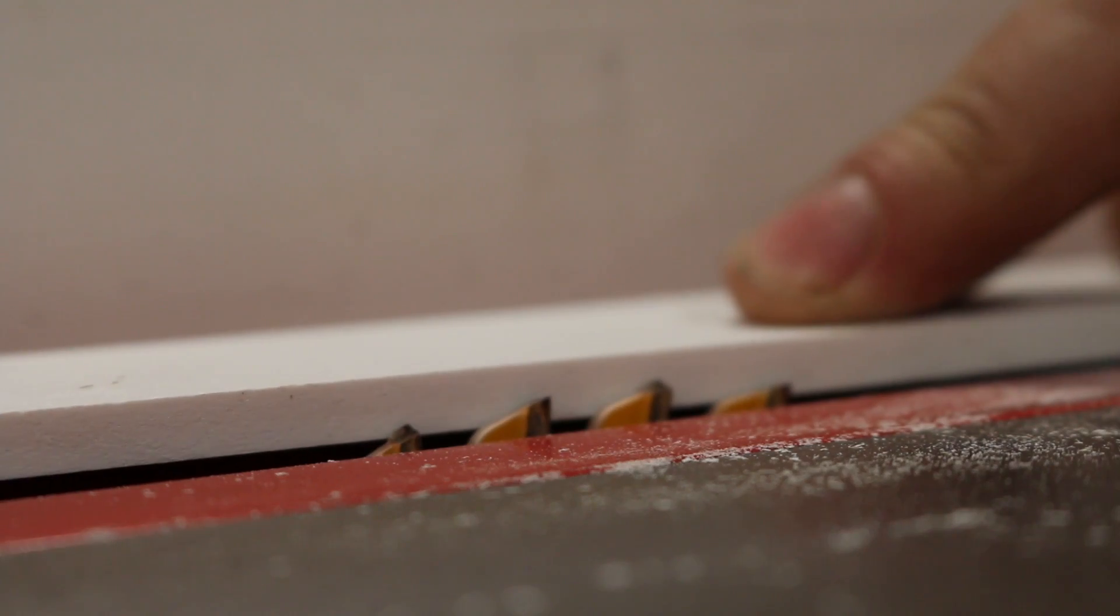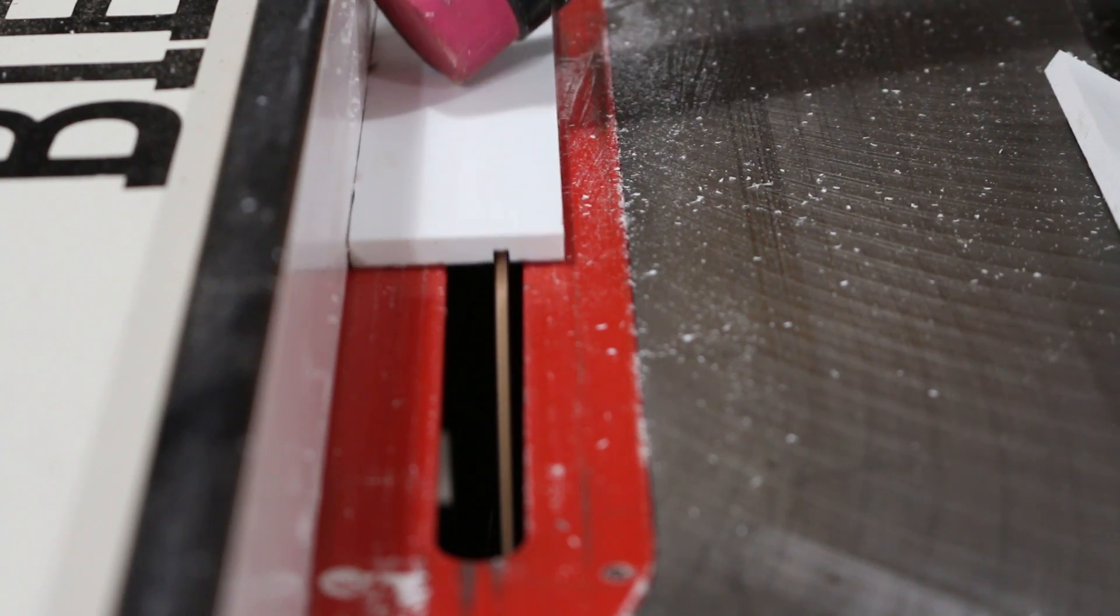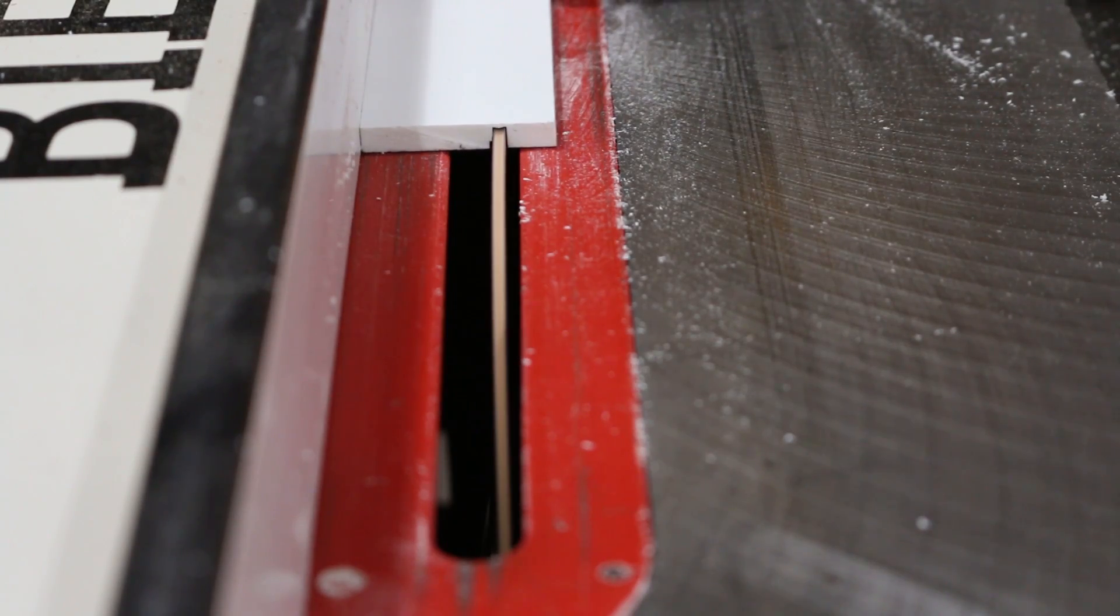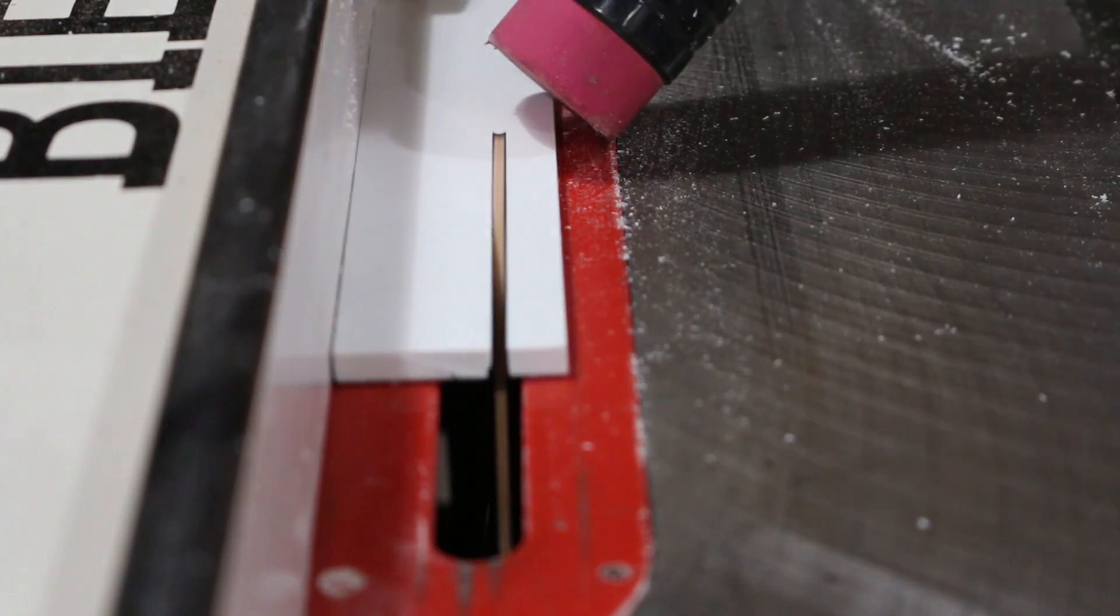Set the blade halfway into the stock to create grooves for the light diffuser. This is done for three sides. Fourth side is cut at the same height as the grooves.